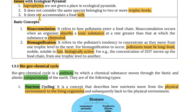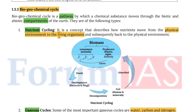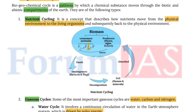In the nutrient cycle, it is a concept that describes how nutrients move from the physical environment to the living organisms and subsequently back to the physical environment. An example would be the living organisms — the producers creating biomass — in turn being eaten by the consumers of primary, secondary,